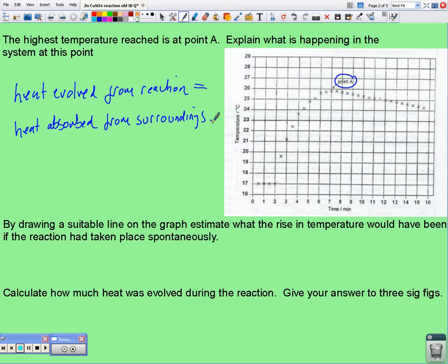Okay, well, this time we have to use a ruler to draw a suitable line on the graph that's going to help us estimate what the rise in temperature would have been if the reaction had taken place spontaneously. Spontaneously, in other words, if the reaction had taken place straight away immediately, then at this point, this is when the reactants were mixed at two minutes, if everything had reacted and no heat had been lost to the surroundings, the maximum temperature change should have occurred there. But it didn't.